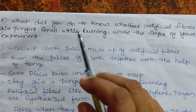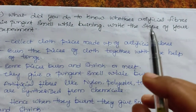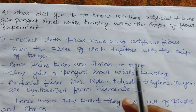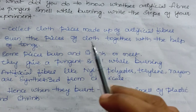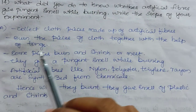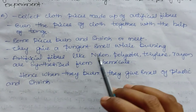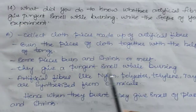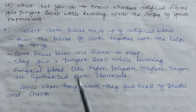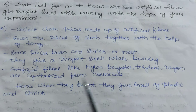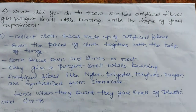Question 14: what did you do to know whether artificial fibers give a pungent smell while burning? Write the steps of your experiment. First, collect cloth pieces made of artificial fibers. Burn the pieces of cloth with the help of tongs. Some pieces burn and shrink or melt, giving a pungent smell while burning. Artificial fibers like nylon, polyester, terrylene, and rayon are synthesized from chemicals; hence when burnt, they give the smell of plastic and shrink.